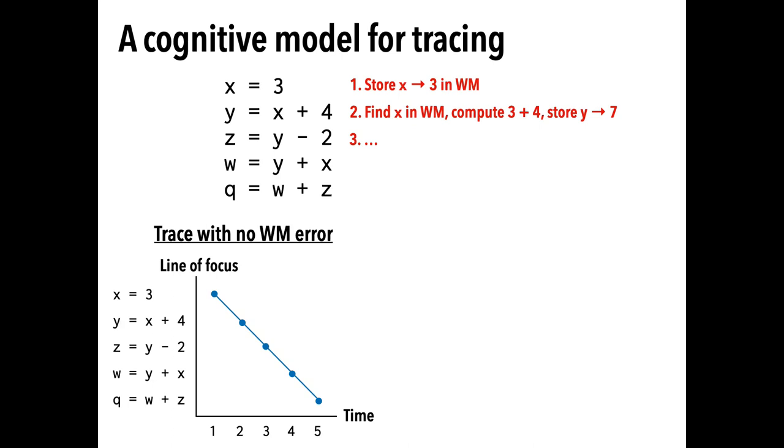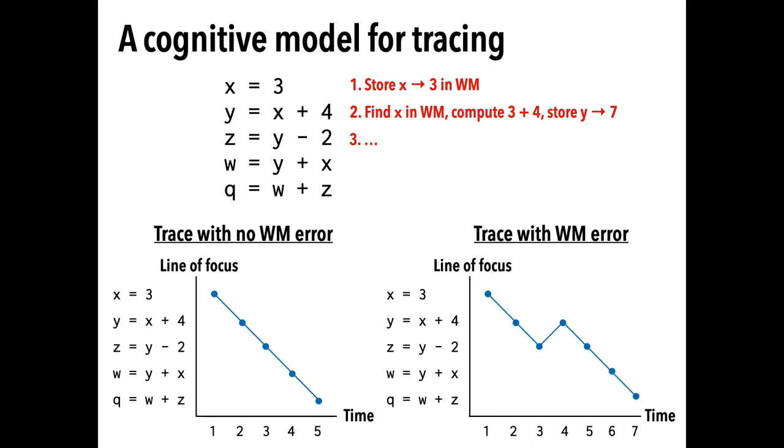One way to view this model is by looking at a person's attention over time. So this graph shows each line of code and how that person's attention moves between the code over time. If a person reads top to bottom, it would look like this. But let's say they forgot the value of y while tracing z is equal to y minus 2. Then their graph might look like this. Here they visit z, then revisit y to compute its value again, then return to z and finish tracing the program.